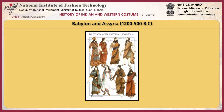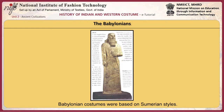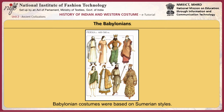We now move on to the Babylonian and Assyrian civilization. After a series of successive invasions, the Babylonians emerged as the dominant victor. Art, culture and politics, though progressively developed, were still rooted in Sumerian tradition. Likewise, Babylonian costumes were based on Sumerian styles.